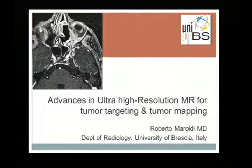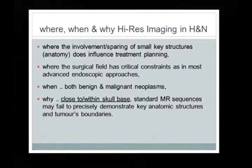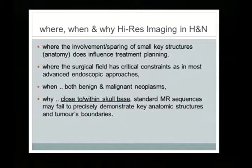This topic is different from others discussed. We are dealing with advances of ultra-high resolution MRI for one aspect of prognostic factors: the analysis and evaluation of the extent of disease. The extent of disease in several conditions is very important. Here, for example, we have the extent of disease from the primary site along perineural spread, with involvement of the cavernous sinus and spread along the greater petrosal superficial nerve.